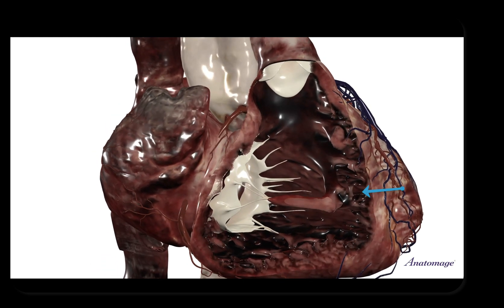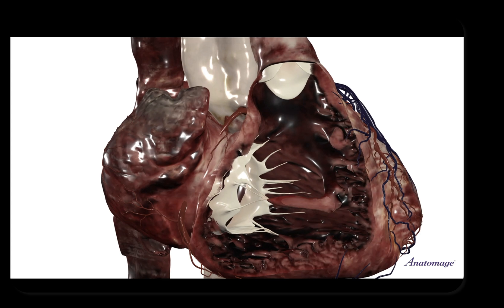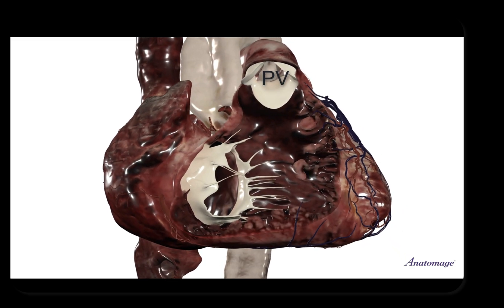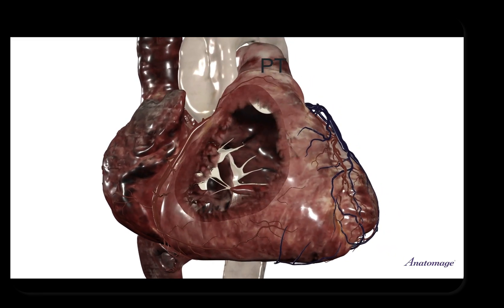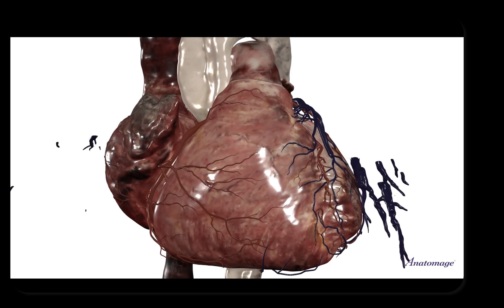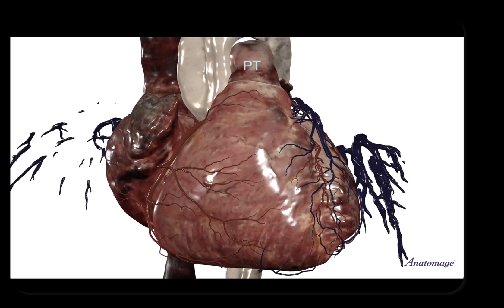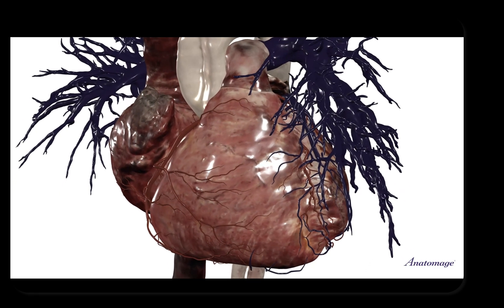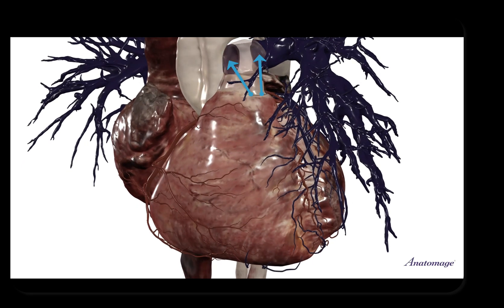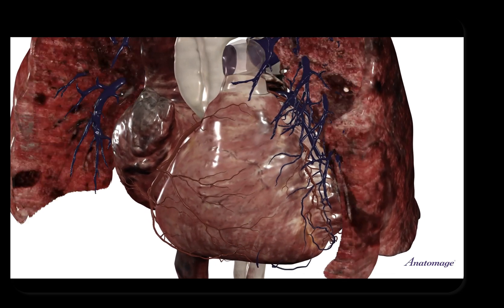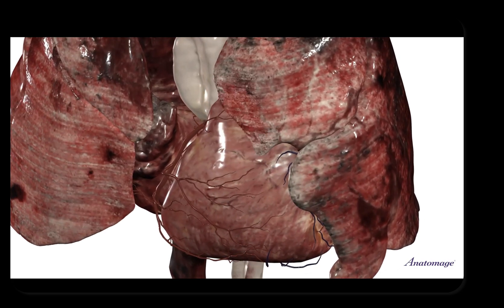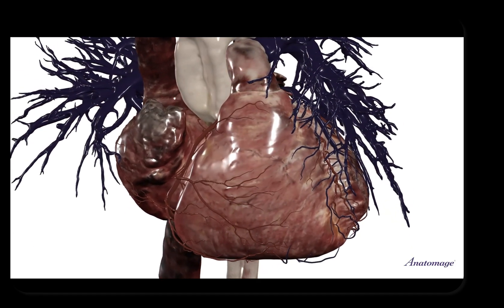Notice all of these trabeculae carneae — this rough myocardium that helps blood to mix so it doesn't clot. There's our outflow tract going into the pulmonary valve and pulmonary trunk. We add the right ventricle back and there is the outflow tract — that's the pulmonary trunk. Let's melt that away to look inside, and there's the opening of the two pulmonary arteries and all the pulmonary vasculature going into the lungs. It's blue because pulmonary arteries deliver deoxygenated blood to the lungs to get oxygenated.